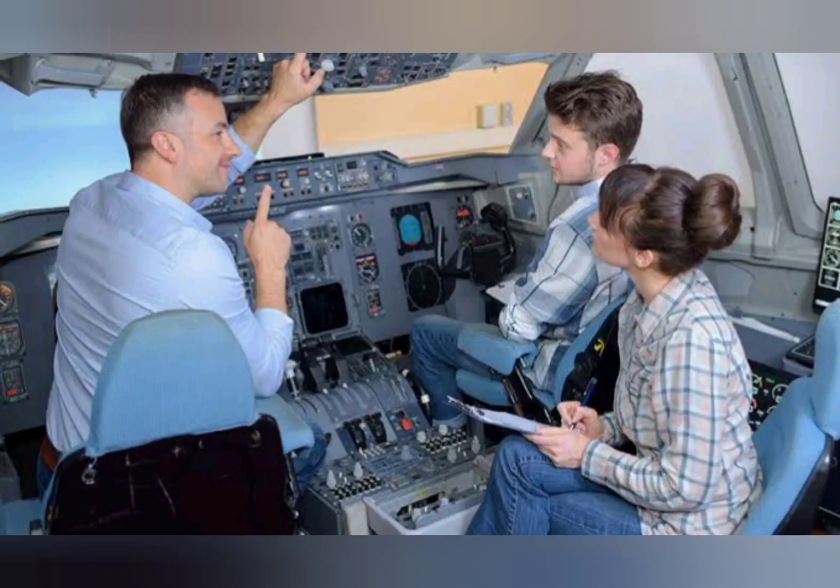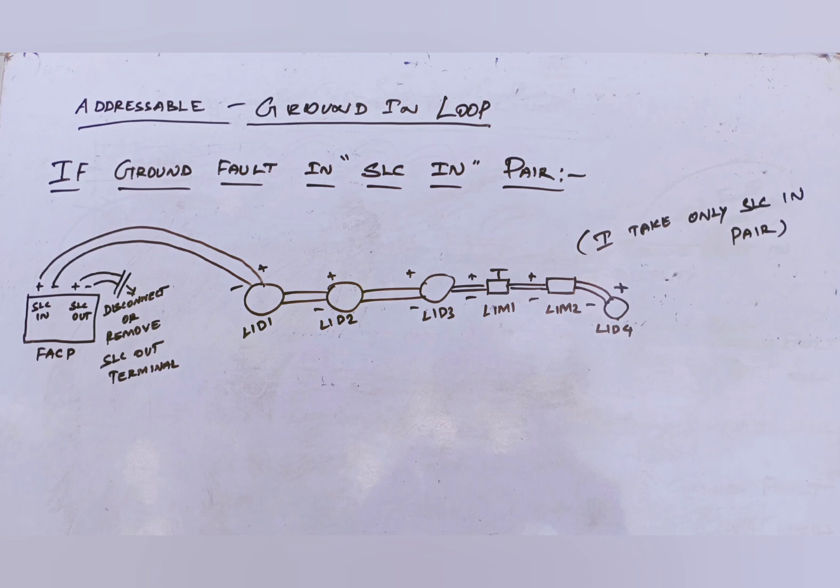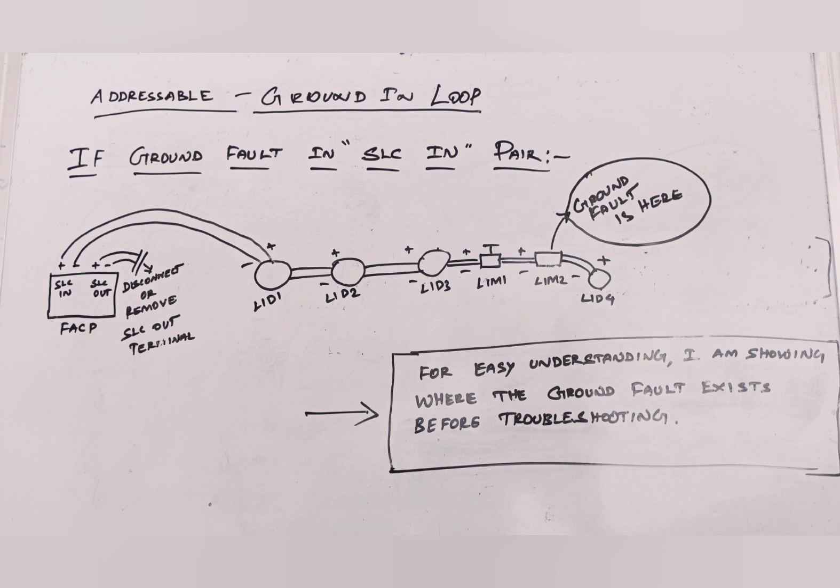First of all, I am taking SLC in pair wire devices. To find out the ground fault easier. This is the best way. So I can disconnect the SLC out pair wire. So we don't have any interrupt over there. For your understanding, I am showing the place where we have ground fault as shown in figure.